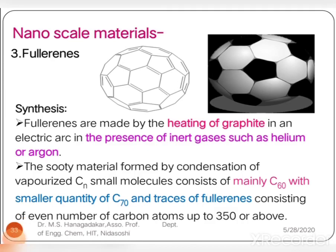Dear students, welcome back to the video lecture of module number five, that is nanomaterials. Moving to the last part of the chapter on nanoscale materials, beginning with the first one: fullerenes. The second one we will study about is carbon nanotubes, and the third type of nanoscale material is graphene.